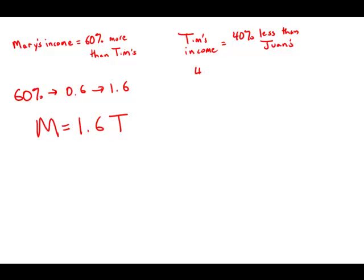For 40% less, we change 40 to a decimal, make it negative because it's less, and then add 1, giving us 0.6. So T equals 0.6J. Tim's income is 40% less than Juan's income.